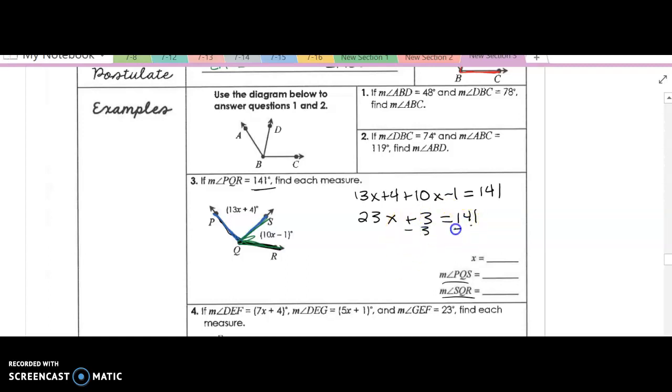Let's subtract 3, subtract 3, this gives me 23x is equal to 138. Divide by 23, divide by 23, this gives me x is equal to 6.